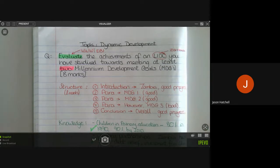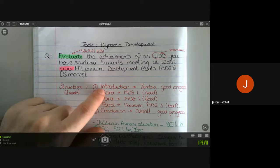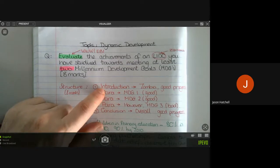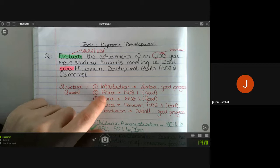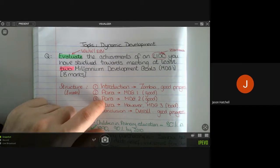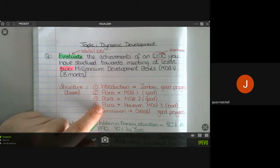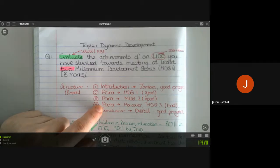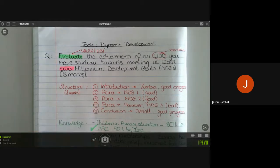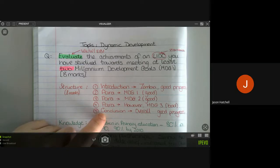So as you can see further down the page, I have already written out a structure, and this structure applies to nearly all eight mark questions. So you should always have an introduction, really short, which is a sentence. Three paragraphs—in this case, two paragraphs for two Millennium Development Goals that went well, that were good and that were achievements, and one paragraph that is a however paragraph or an on the other hand paragraph which did not go so well or still needs work. Finally, you should end with a final sentence which is a conclusion saying overall Zambia has made good progress in these ways.